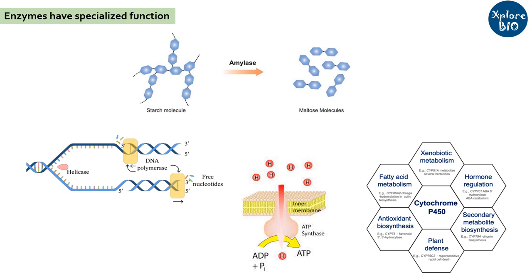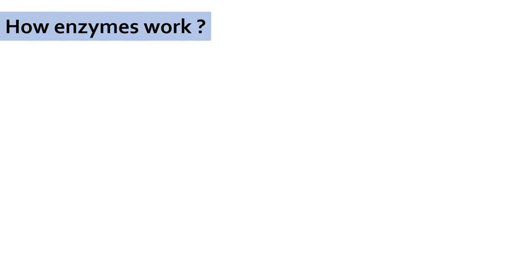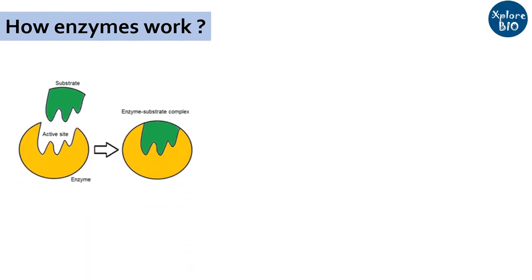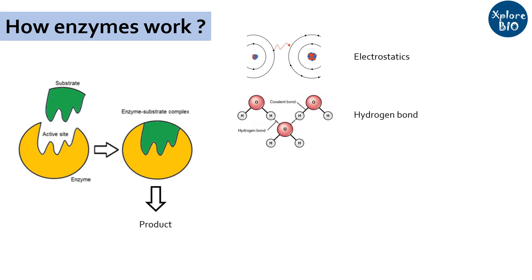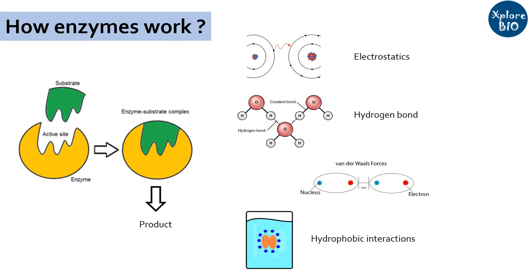While certain enzymes perform more than one function and can convert a group of similar substrates to products. Some enzymes break down one substrate into two products; other enzymes bring together two substrates to form one product; while some enzymes reshuffle functional groups and bonds. Enzymes are three-dimensional molecules that have active sites where a substrate binds via multiple weak interactions and gets converted to product. These interactions may be electrostatic, hydrogen bonds, van der Waals forces, or hydrophobic interactions.